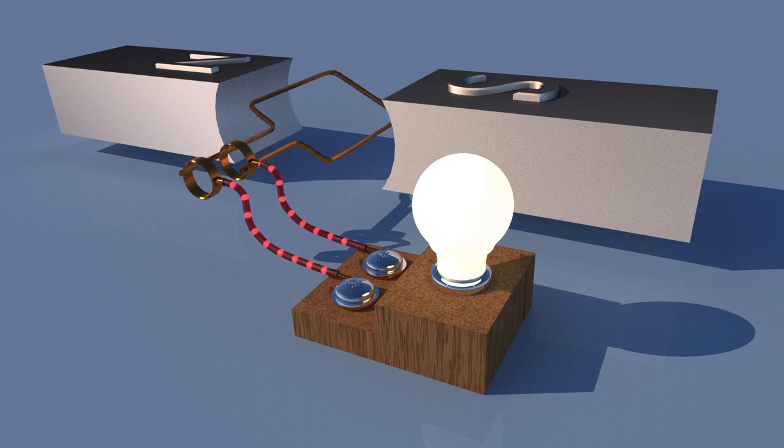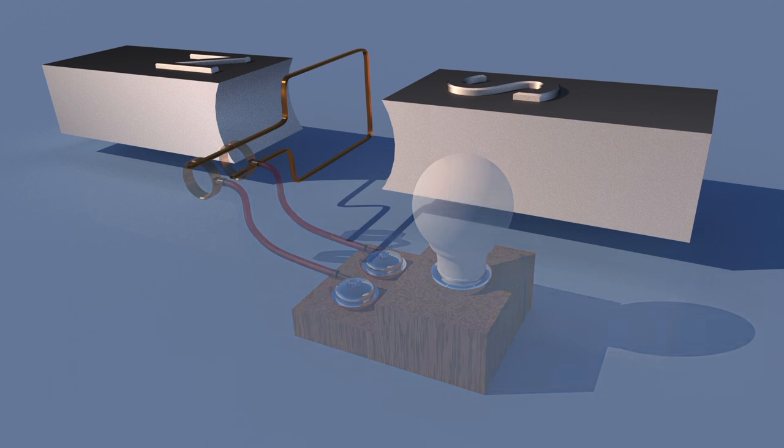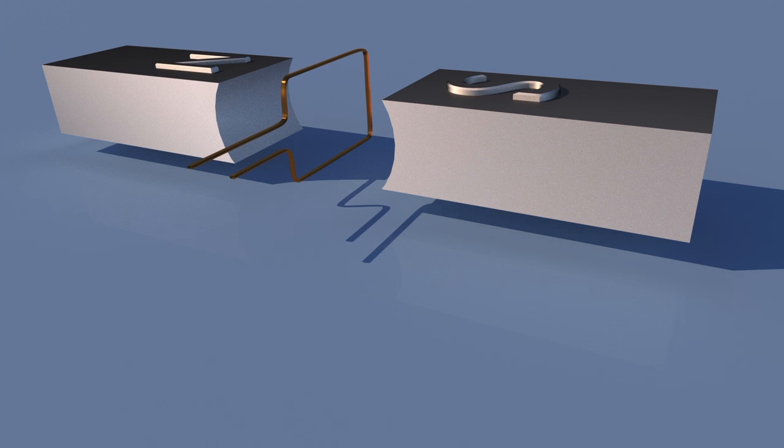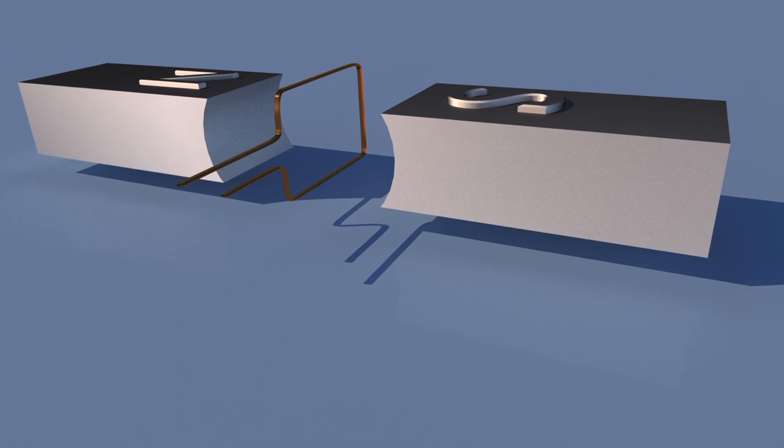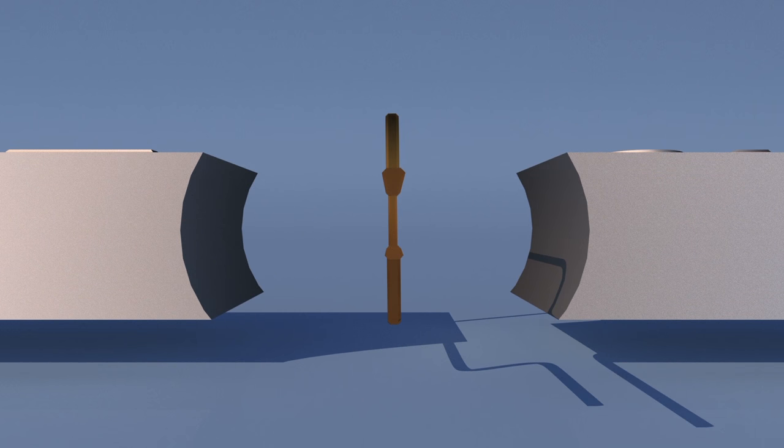If we look at the conductor head-on, rather than from the side, we can see what happens as the conductor moves through its rotation. We'll take out the slip rings and the brushes in this view, so it will be easier to concentrate on the conductor. We'll put the slip rings and the brushes back in a few minutes.